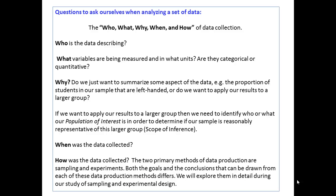When was the data collected? And how was the data collected? The two primary methods of data production are sampling and experiments. Both the goals and the conclusions that can be drawn from each of these data production methods differ. We will explore them in detail during our study of sampling and experimental design.